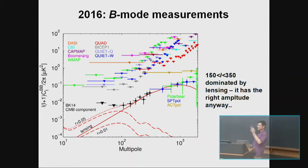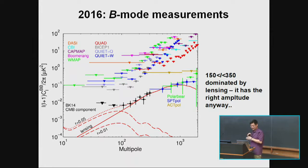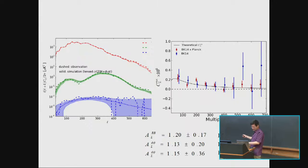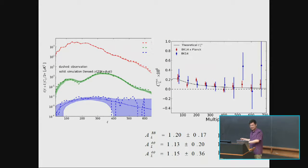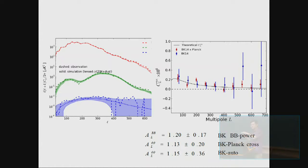We derived the expected lensing amplitude from the B-mode power spectrum alone — just from the measured amplitude, guessing it's lensing — and got a value consistent with Lambda-CDM. We also did the full lensing reconstruction and that also agrees with Lambda-CDM. The good agreement between these two numbers constrains the room available for alternative B-mode models, like string-generated Kaiser-Stebbins-type effects.